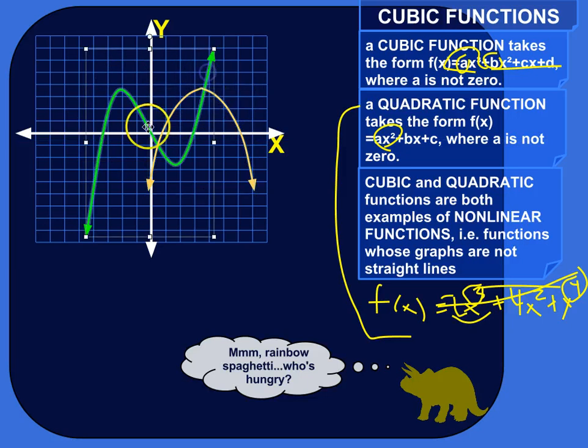Cubic function is a little bit more exciting. Instead of just one hill or valley, there's actually two. There's two critical points here where the graph changes direction. So it's going up and then now we're going back down. Oh, wait, now we're going up.